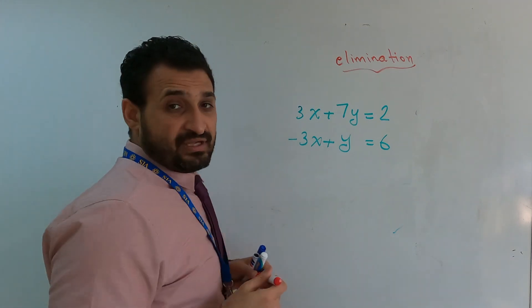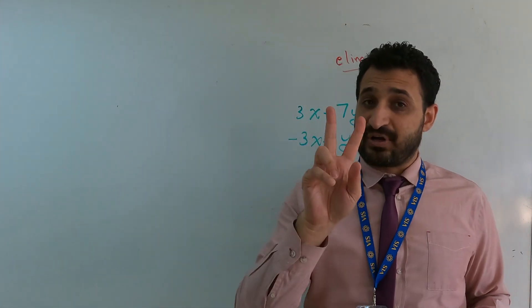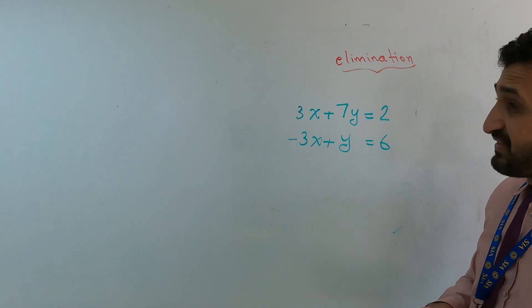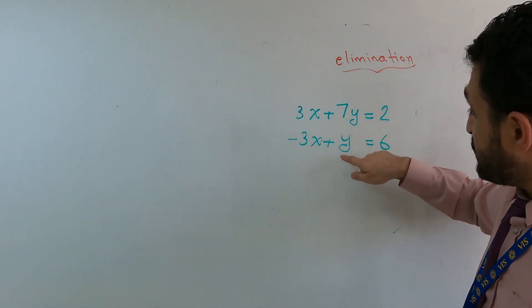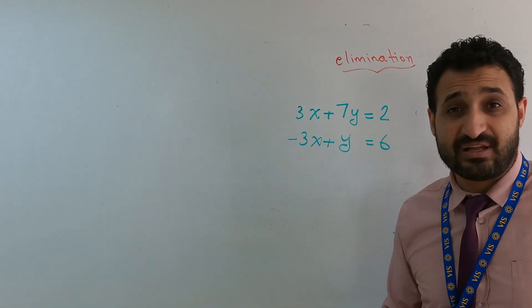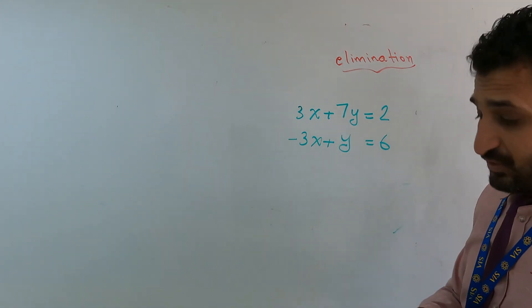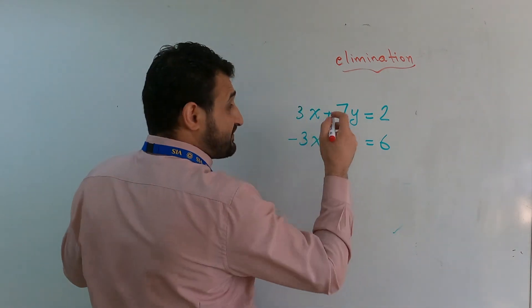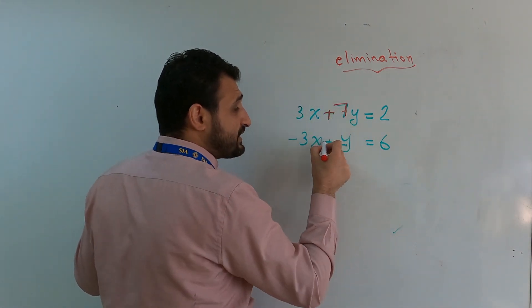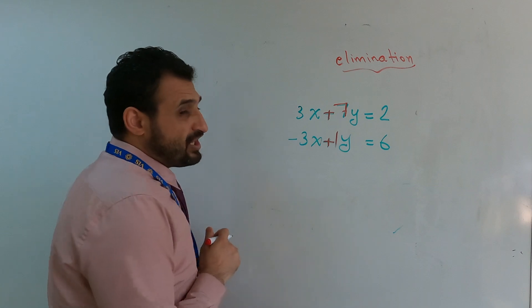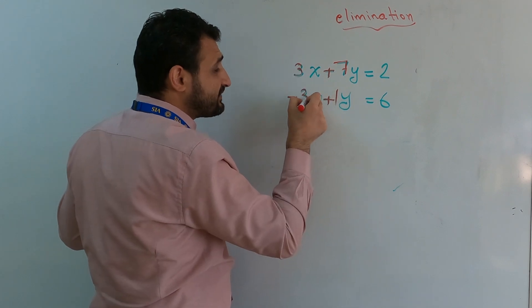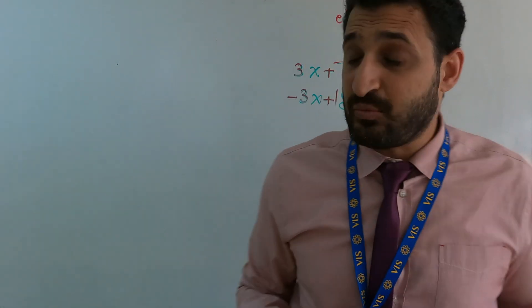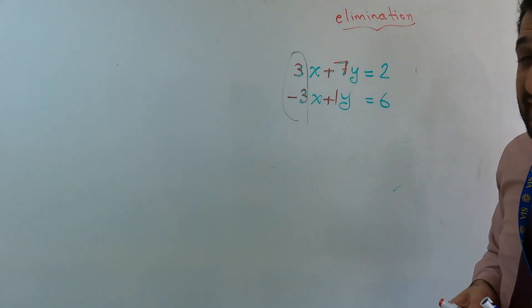So elimination. Now, do you remember when I said remember two things? The first one: are they organized or ordered? Yes, x above x, y above y, equal above equal, number above number. Now the second one: look at the coefficients. Here I have 7, positive 7, here I have positive 1—are they the same with different signs? No. Look here: x, 3 and negative 3. They are the same with different signs, 3 and negative 3.